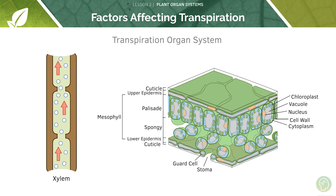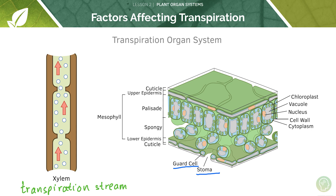The transpiration stream occurs through the xylem — water is taken up by the roots and moves up towards the leaf surfaces. The stomata (singular: stoma) are the gaps in the leaf surface, surrounded by guard cells. From this tutorial, all you need to know is that this is how water leaves the leaf — through the stoma — and that it is controlled by the turgidity of the guard cell.